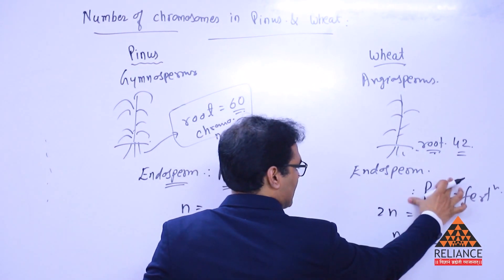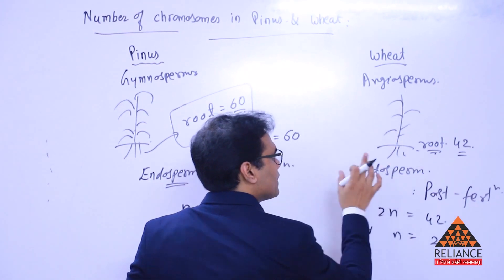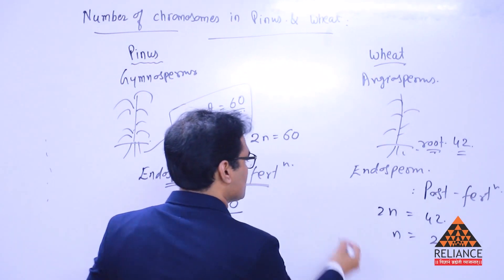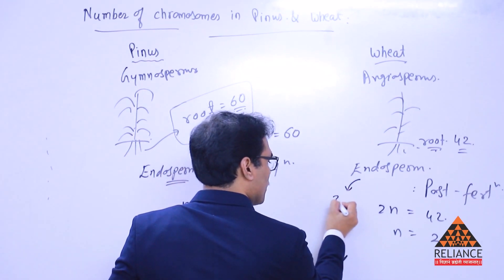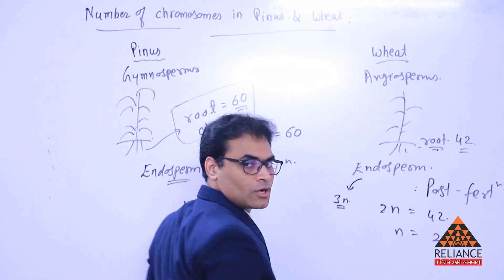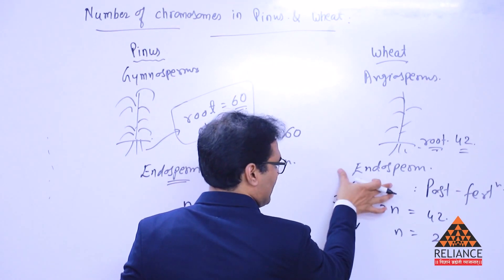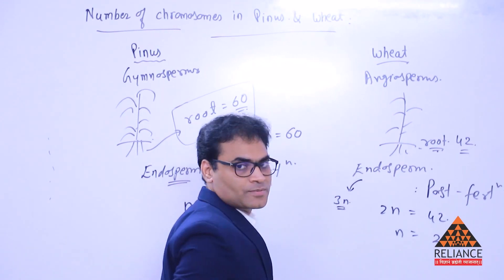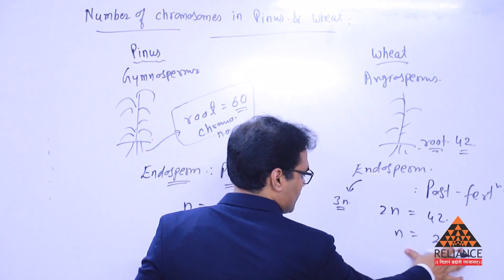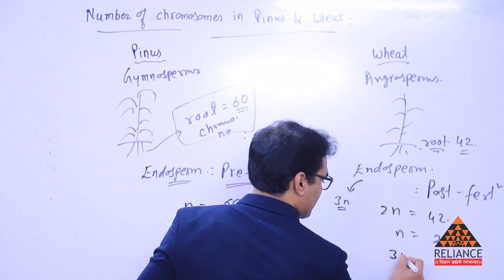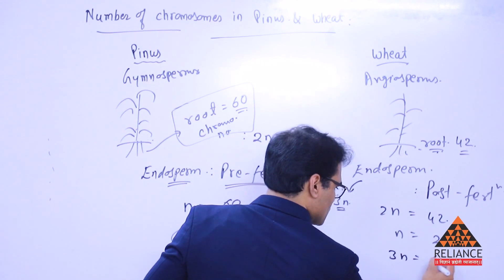Post-fertilization event, in case of any endosperm, makes the endosperm which is a triploid condition. So, this is what you need to find out because you're going to find out the number of chromosomes in endosperm cell. So, N, as you say, is 21, definitely 3N will become 63.